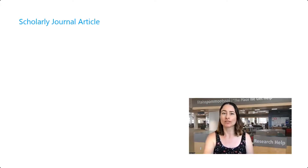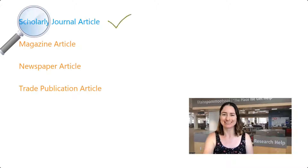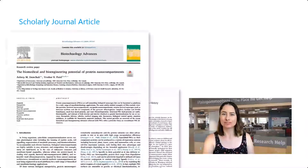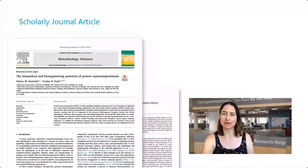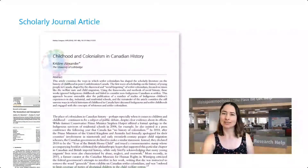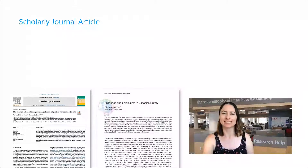In this video, we will dissect the source type known as Scholarly Journal Article, so you'll know exactly how they differ from other types of articles, and you can be sure to select only the sources that make the grade. Here are a couple examples of scholarly articles. These two look very different at first glance, but by the time I'm done dissecting them for you, you will see the key scholarly characteristics which differentiate them from other kinds of articles and information.